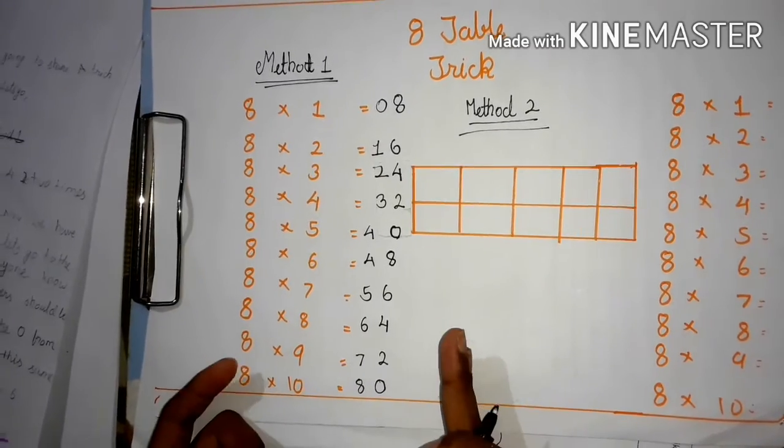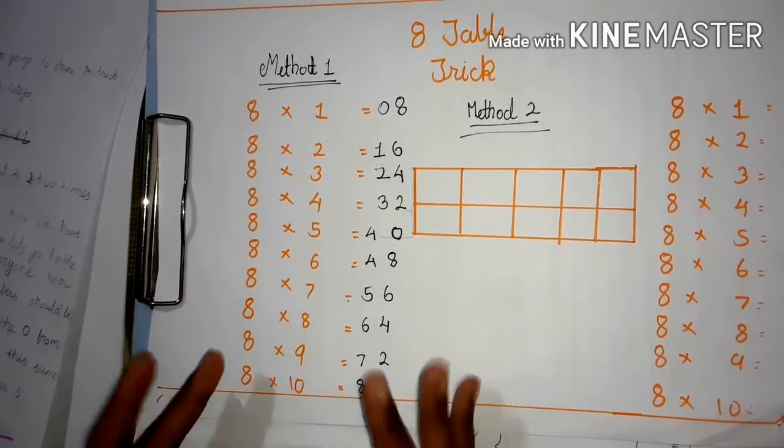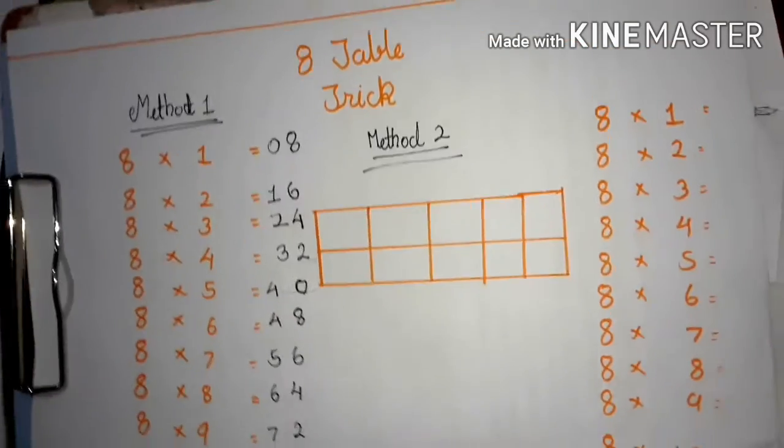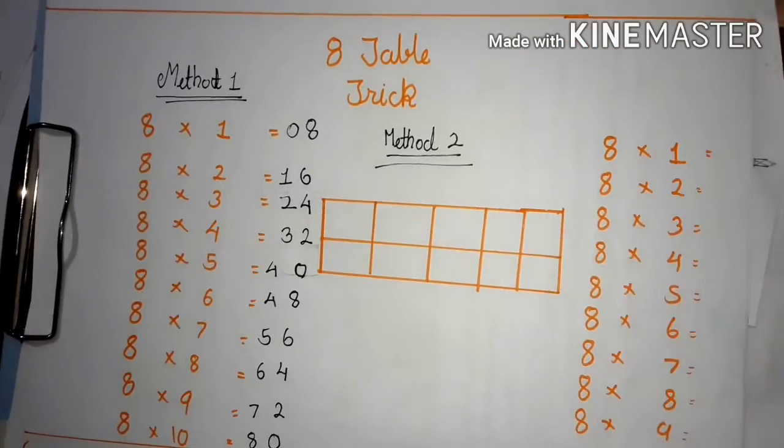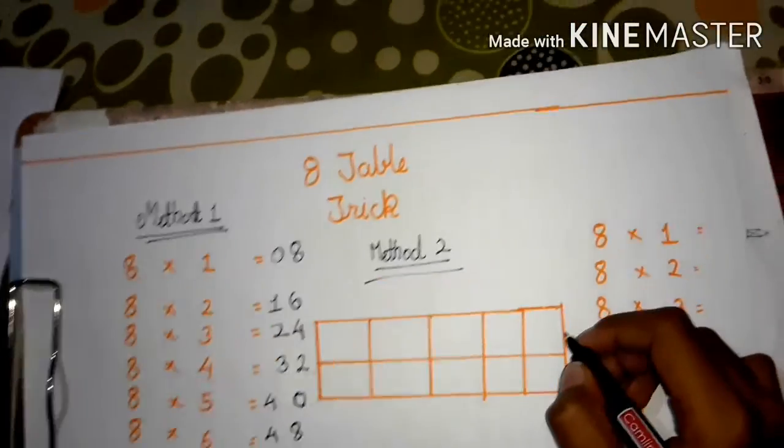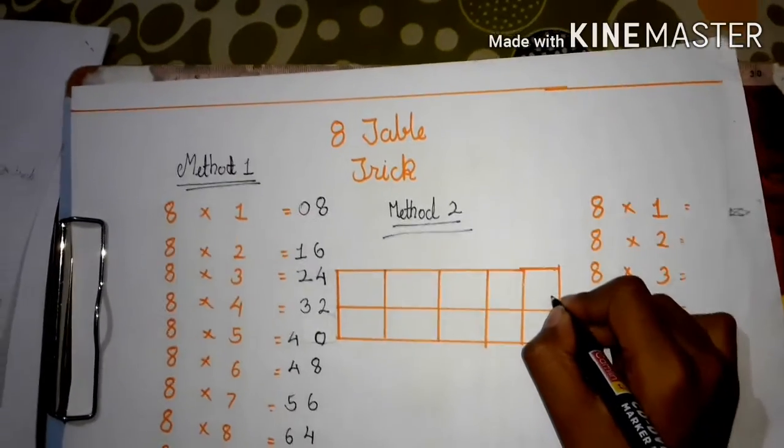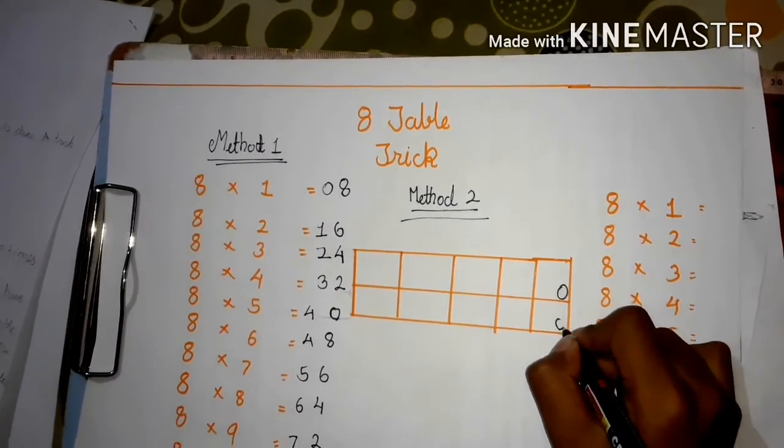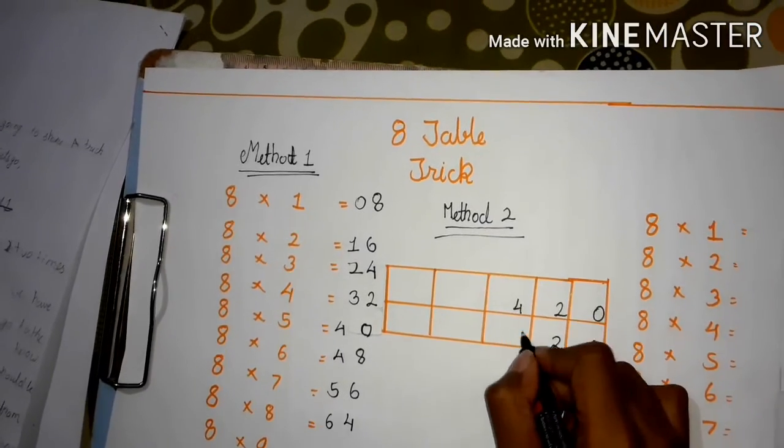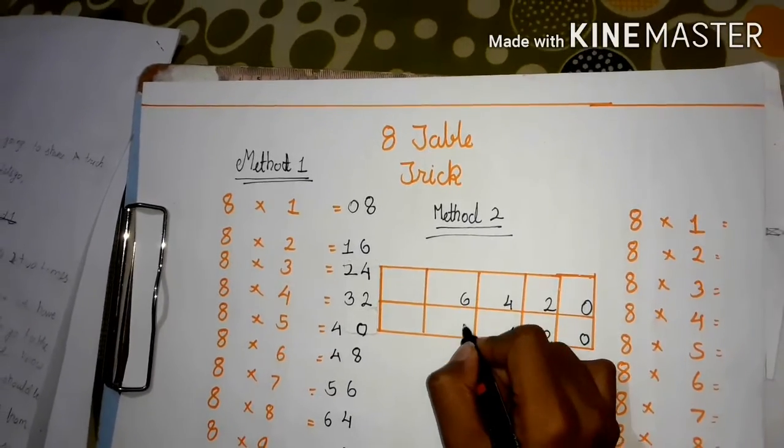So we have completed with Method 1. Let's move to Method 2. We know the even numbers. Write the even numbers 2 times in the column: 0, 0, 2, 2, 4, 4, 6, 6, 8.